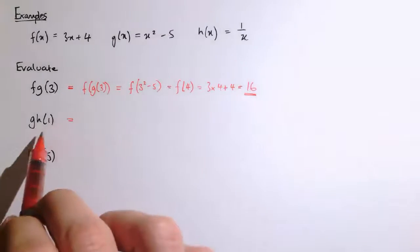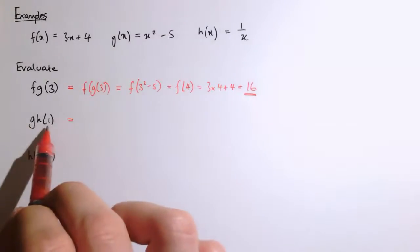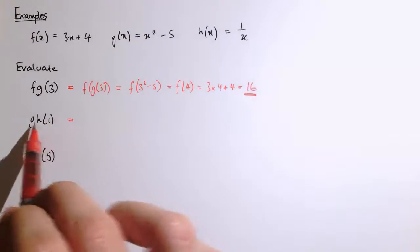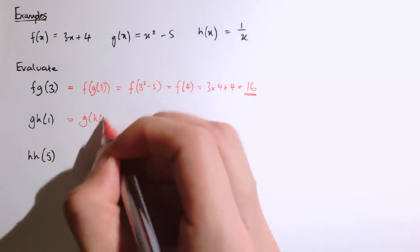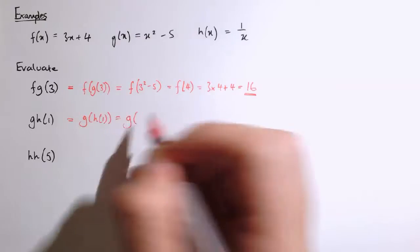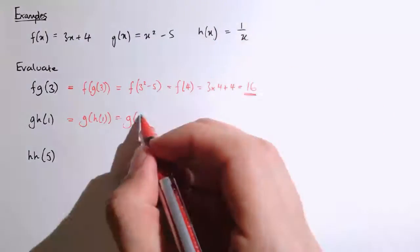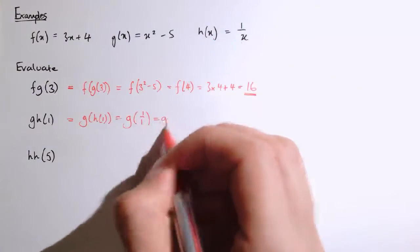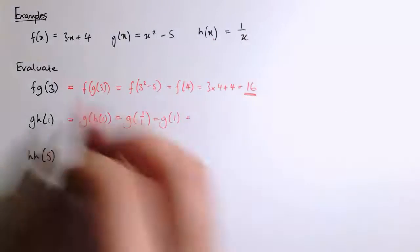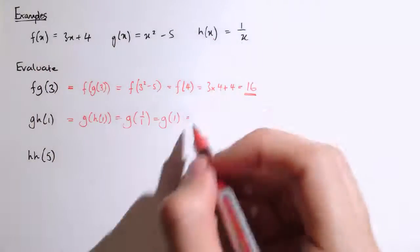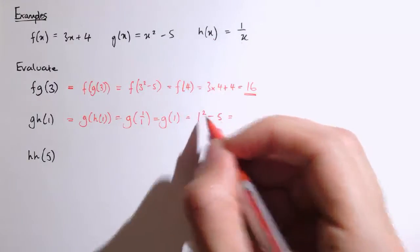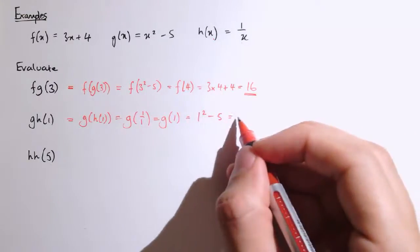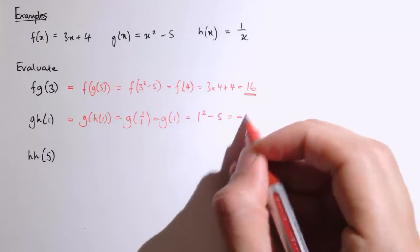And g of h, so this next one, g of h of 1, so this means apply h first, and then apply g. So g of h of 1, that's g of, well, h of 1 is just 1 over 1, which is 1, which is 1 squared minus 5, which is minus 4.